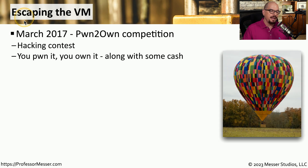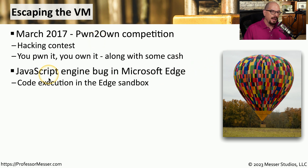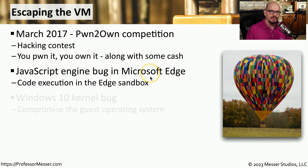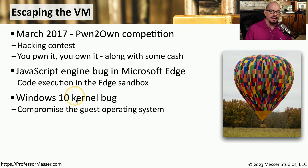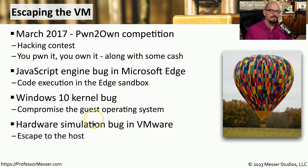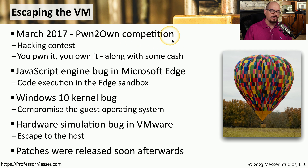A practical example of a VM escape occurred in March 2017 at the Pwn to Own competition — a hacking contest where if you can pwn the device, you get to physically own it and take that laptop home. In this competition, attackers used a bug in the JavaScript engine of Microsoft Edge to gain access to a sandbox built into the Edge browser. From that sandbox, they exploited a vulnerability within the Windows 10 kernel, gaining full access to the guest operating system. From there, they took advantage of a hardware simulation bug within VMware to hop from one VM to another VM on the same hypervisor. Fortunately, this vulnerability was only demonstrated for the first time during this competition, which allowed VMware time to create and roll out a patch so no one else could take advantage of this VM escape.